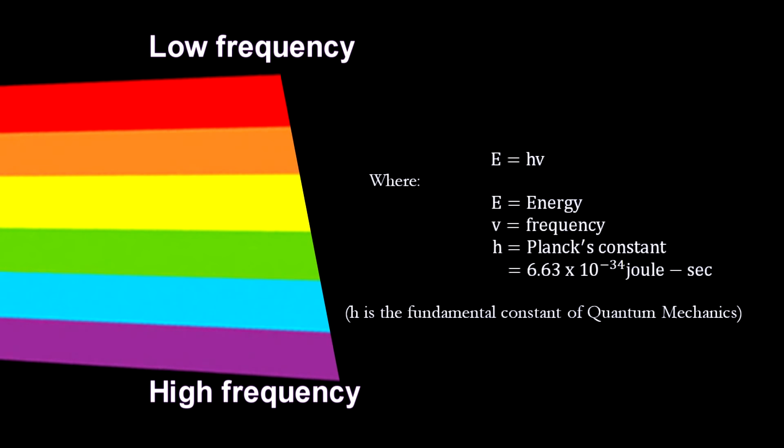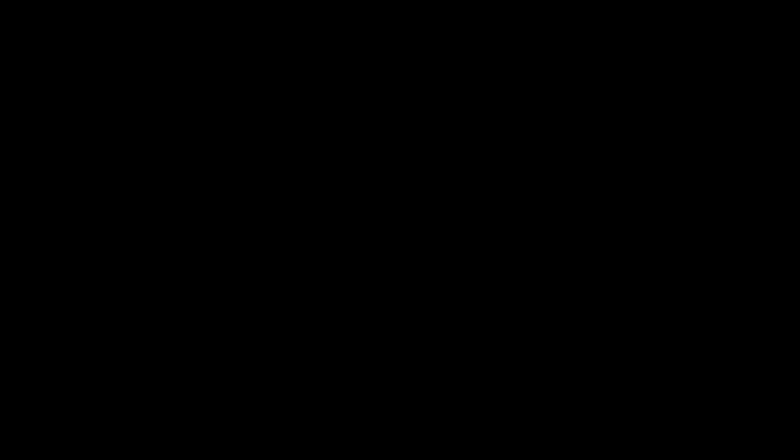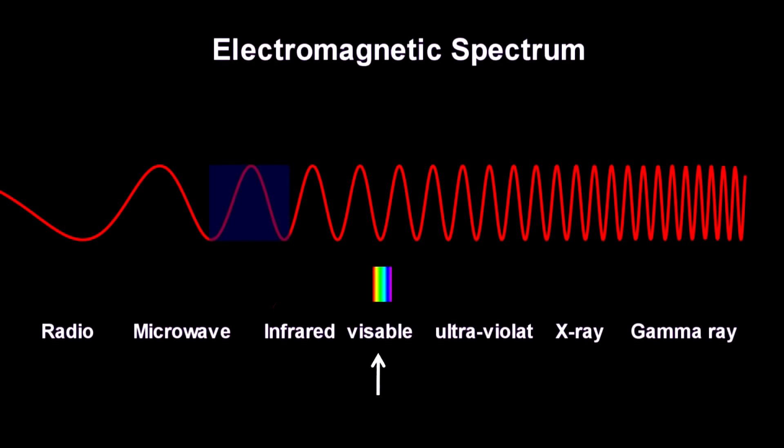An important relationship between energy and light is that a light's energy is directly proportional to the frequency. So when physicists see color, they think energy. Red is low energy light. And blue is high energy light. Here we see the full electromagnetic spectrum, with visible light in the middle.